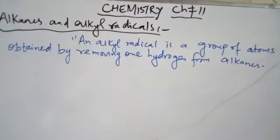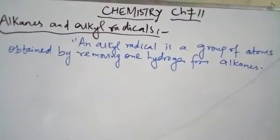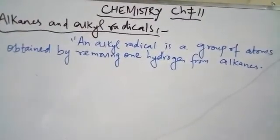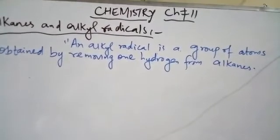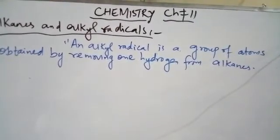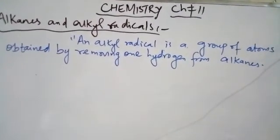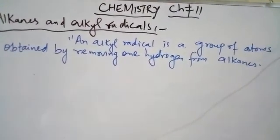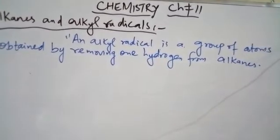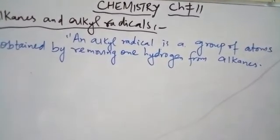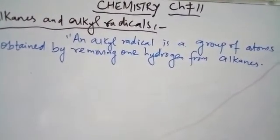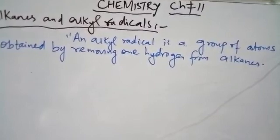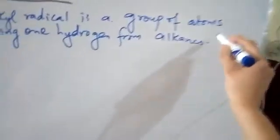Assalamu alaikum students! Today's topic is alkanes and alkyl radicals. An alkyl radical is a group of atoms obtained by removing one hydrogen from an alkane. When we remove hydrogen from normal alkanes, we will get alkyl radicals, and they are represented by the symbol R.